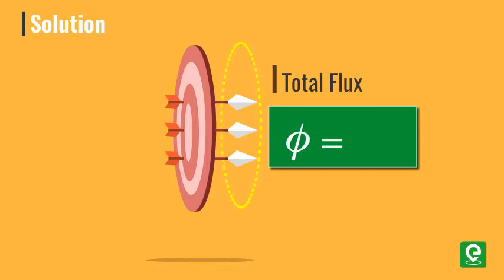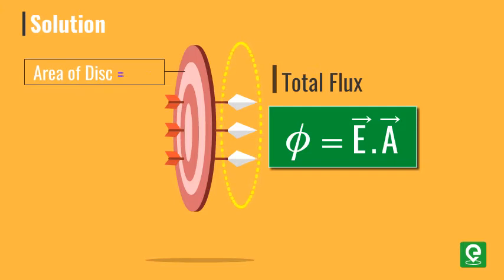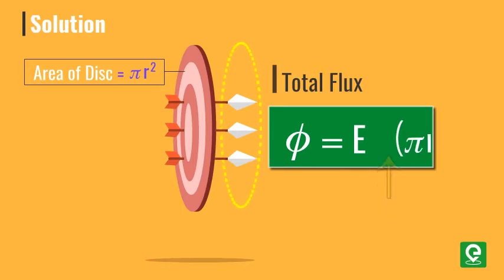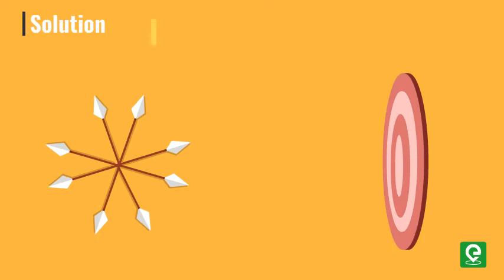Therefore, total flux passing through the disk will be given by E dot A, area of disk pi r square. On substituting the values we get flux equal to E times pi r square.